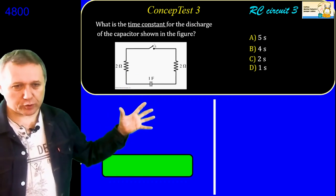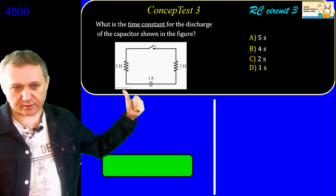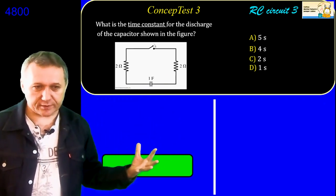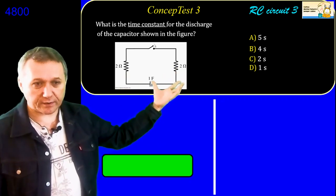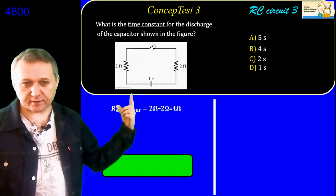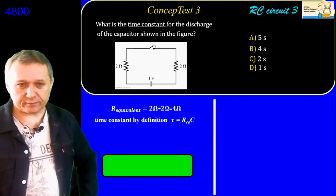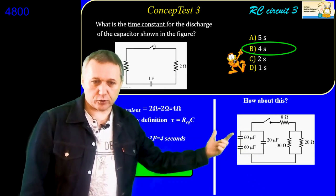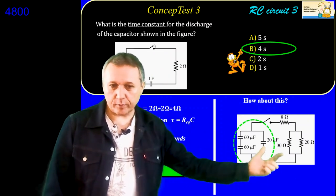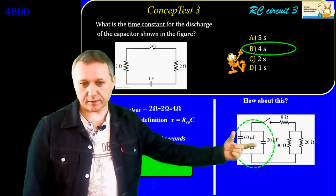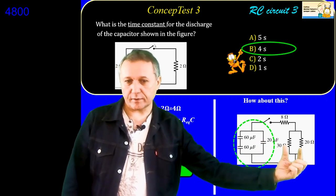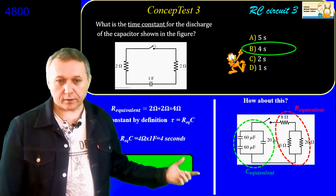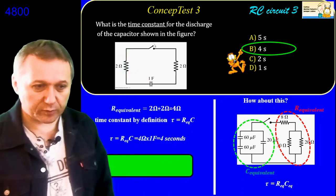Before we go, how can we find the time constant when there are two resistors and one capacitor? Use equivalent resistance. These two resistors are in series, so the equivalent resistance is 4 ohms. Multiply by the capacitance and you get the time constant. For more complicated circuits with bunches of capacitors and resistors, calculate the equivalent capacitance and equivalent resistance separately, then multiply R_eq by C_eq to get the time constant.